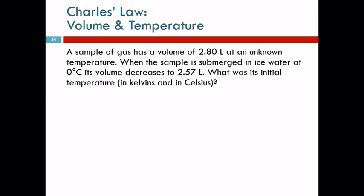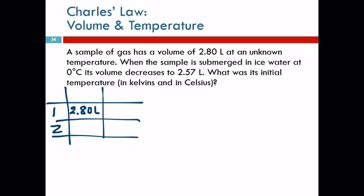So let's do a problem. A sample of gas has a volume of 2.80 liters at an unknown temperature. When the sample is submerged in ice water at 0 degrees Celsius, its volume decreases to 2.57 liters. What was its initial temperature in Kelvins and in Celsius? Read through it even if it doesn't make sense the first time. Make a table, one and two. Go back and harvest numbers. There's a number, write it down. 2.80 liters. Liter is a measurement of volume, so I'm going to call this column V.